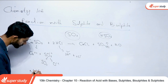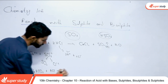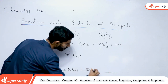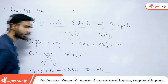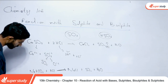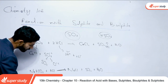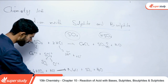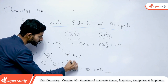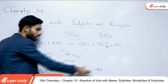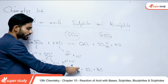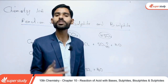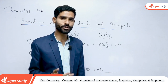Bisulfide ka bhi reaction hota hai. Agar aap NaHSO₃ ko HCl ke saath react karte ho, to hum get karenge NaCl, aur saath mein SO₂ banega aur H₂O ki formation hogi. NaHSO₃ ionize hota hai Na⁺, H⁺, aur SO₃²⁻ mein. SO₃²⁻ further SO₂ aur O²⁻ mein toota hai. H⁺ ions O²⁻ se milkar water banate hain, aur Cl⁻ ions Na⁺ se milkar NaCl banata hai.